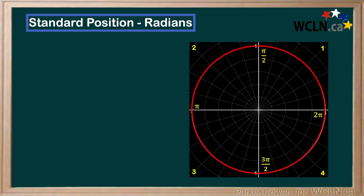Now, let's work through some examples. Our first example: plot 3pi over 4 in standard position. There are two approaches to this question. The first approach is to just convert 3pi over 4 into degrees and go from there. The second approach is to try and plot it in radians, using the axes we've labeled.